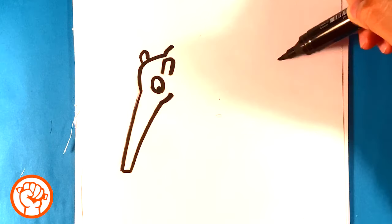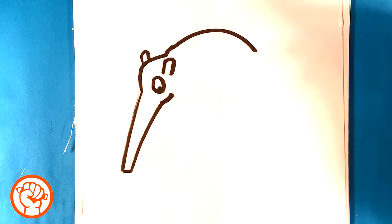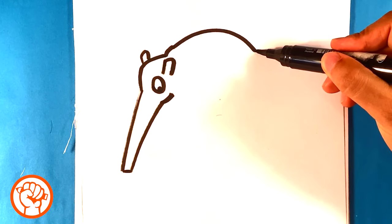We're gonna throw a large curve for the back right there. We've got his back, and then another curve for his tail.